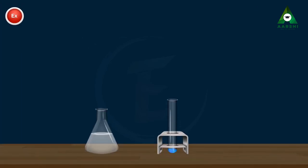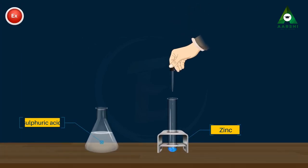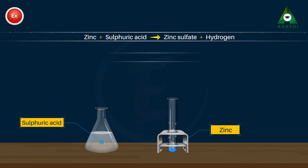For example, let's look at the following chemical equation. Zinc plus sulfuric acid gives rise to zinc sulfate plus hydrogen. This is further simplified as: Zinc plus H₂SO₄ gives rise to ZnSO₄ plus H₂.